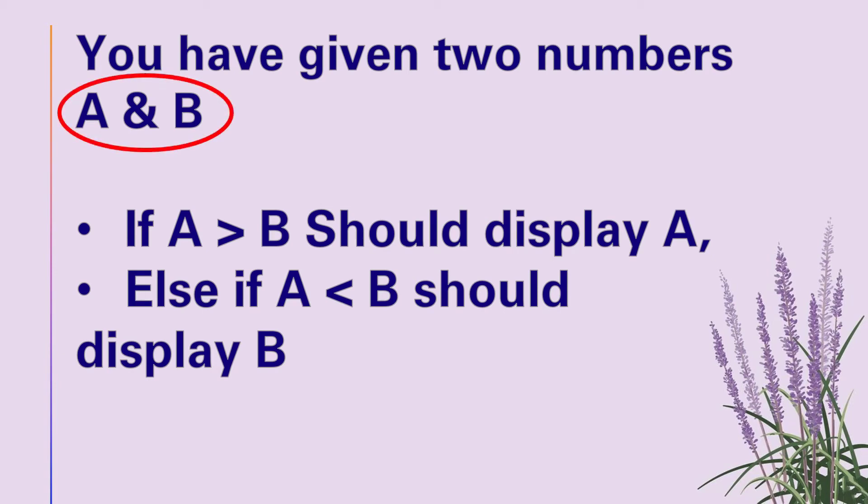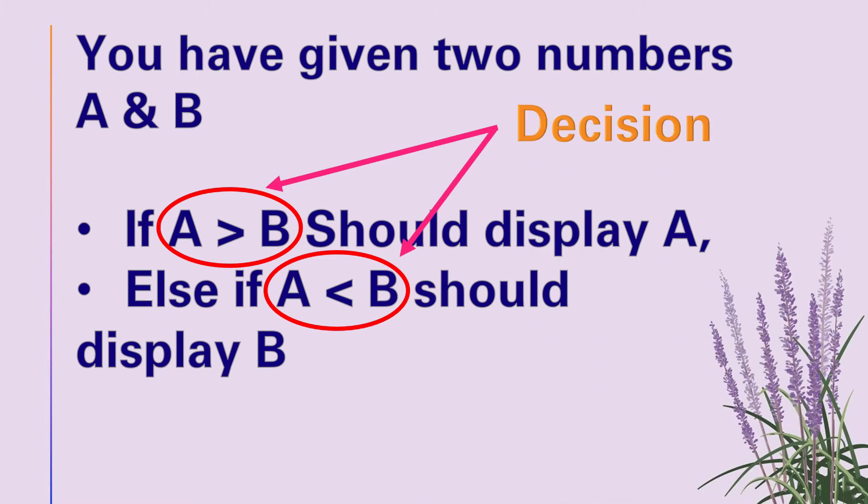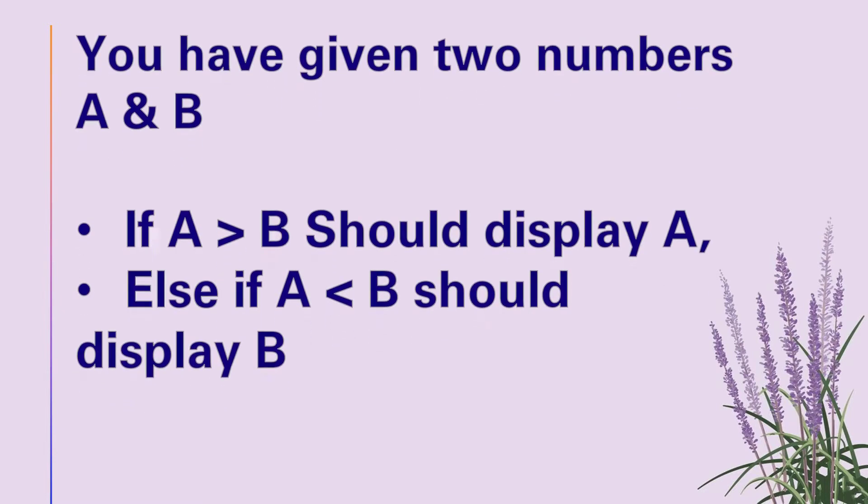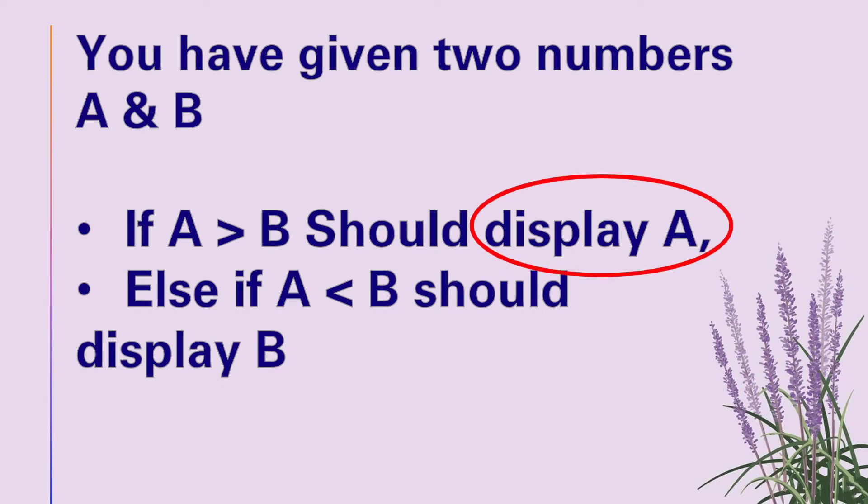Now let's find out the input, output, and the decision separately. As you can see in the question, first they are saying you have given A and B numbers, so this will be your input. Next they are saying about a comparison. If A is greater than B, we should display A. If A is smaller than B, we should display B. So this comparison should be the decision. The final answer after the comparison will be the output.